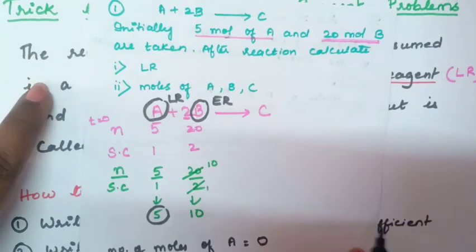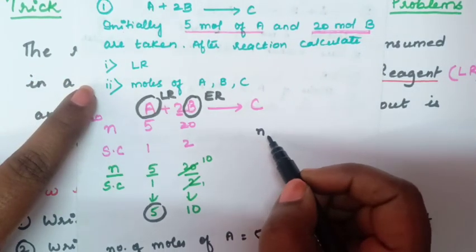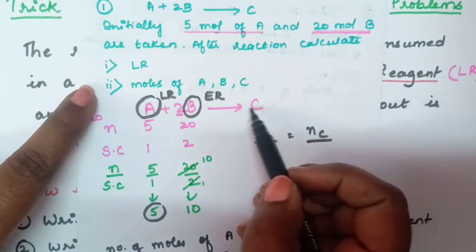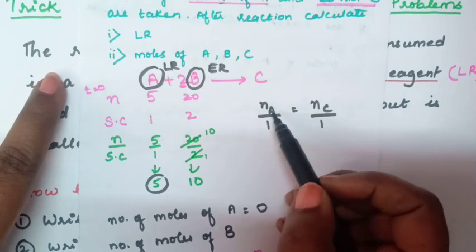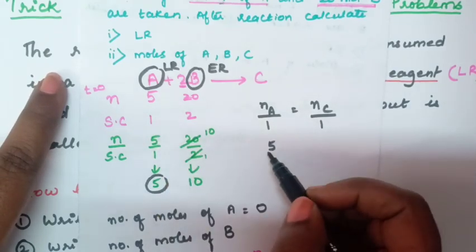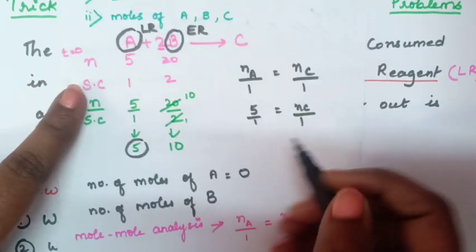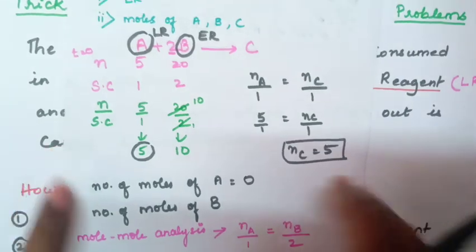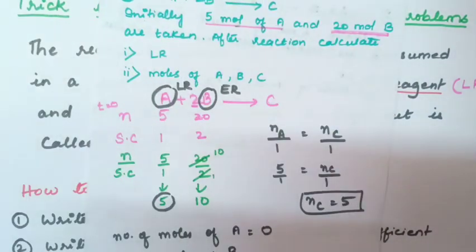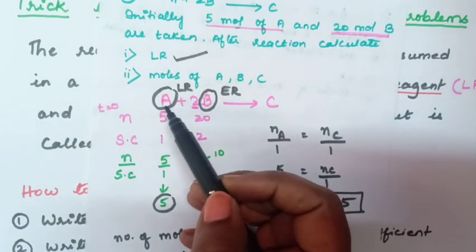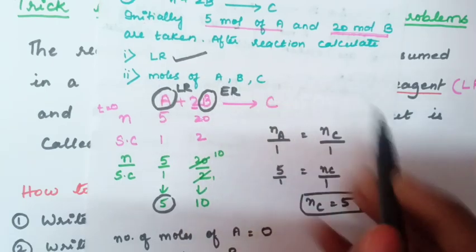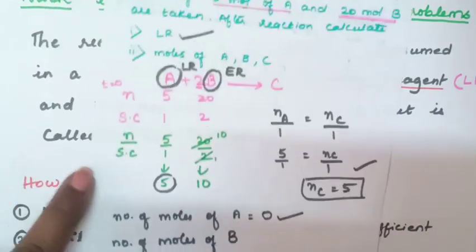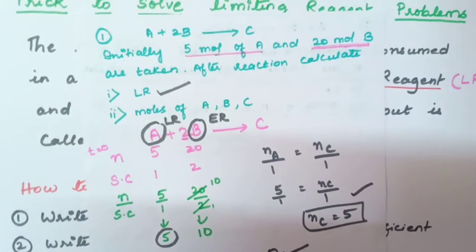Now find the number of moles of C using mole-mole analysis. Number of moles of A divided by stoichiometric coefficient of A equals number of moles of C divided by stoichiometric coefficient of C. That is 5 by 1 equals NC by 1, so number of moles of C equals 5 moles. So A is LR, moles of A = 0, B = 10, C = 5.